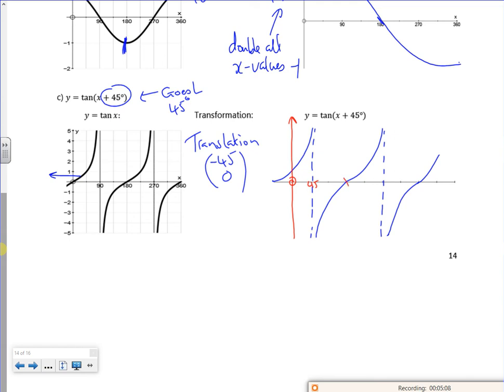That would be 135, because that's 180 take 45. That would be 270 take 45, which is 225. That would be 360 take 45, so that's 315.